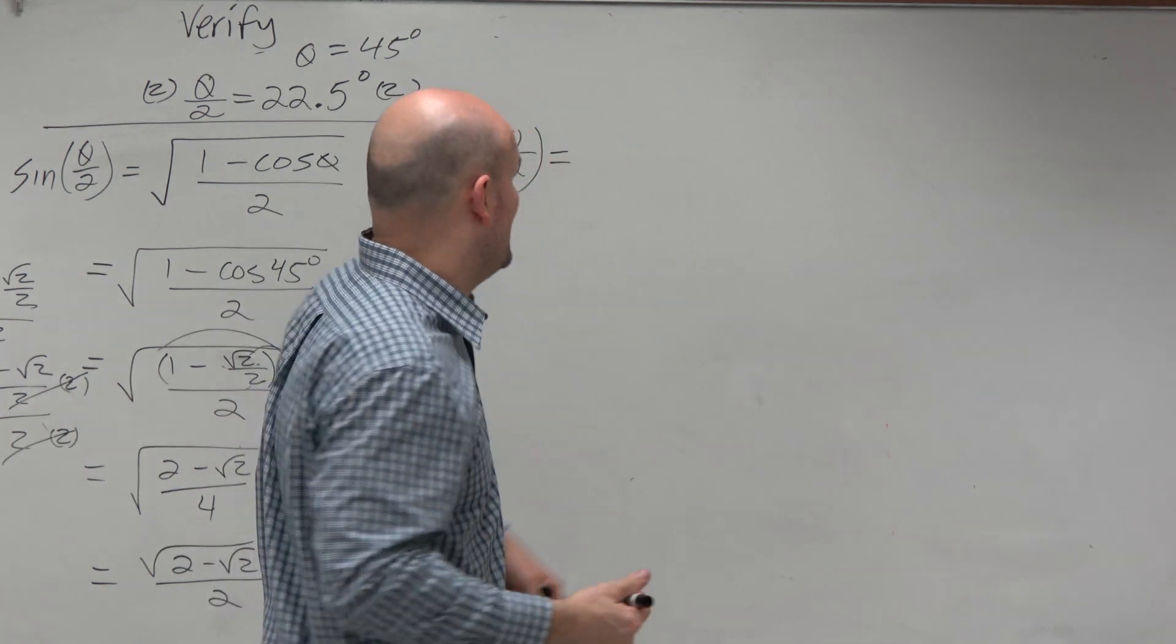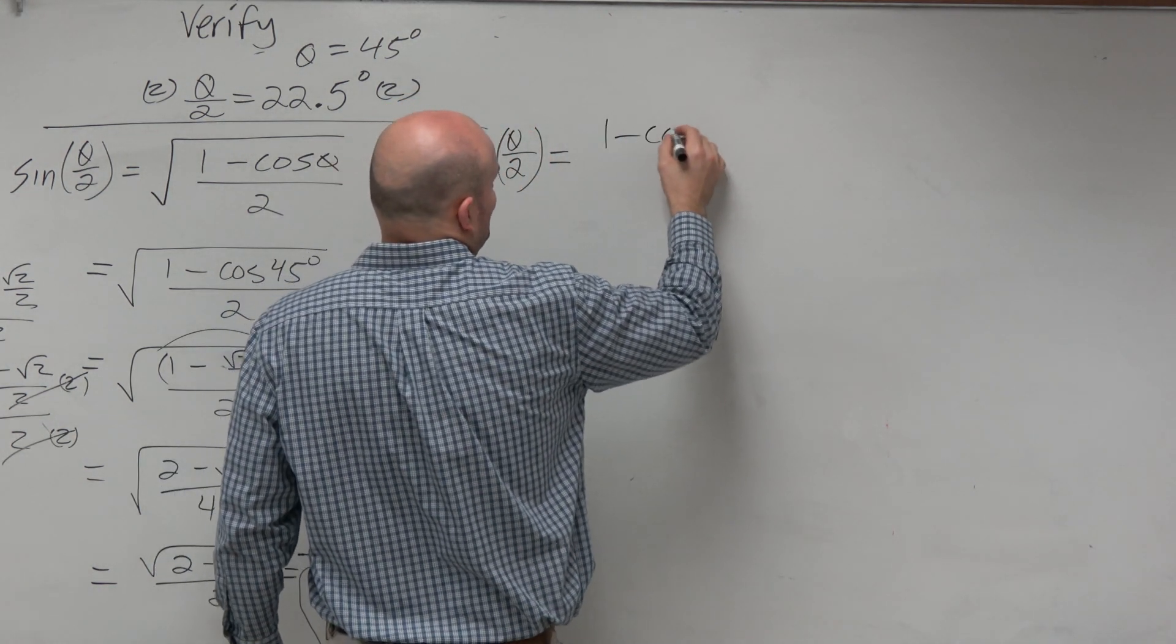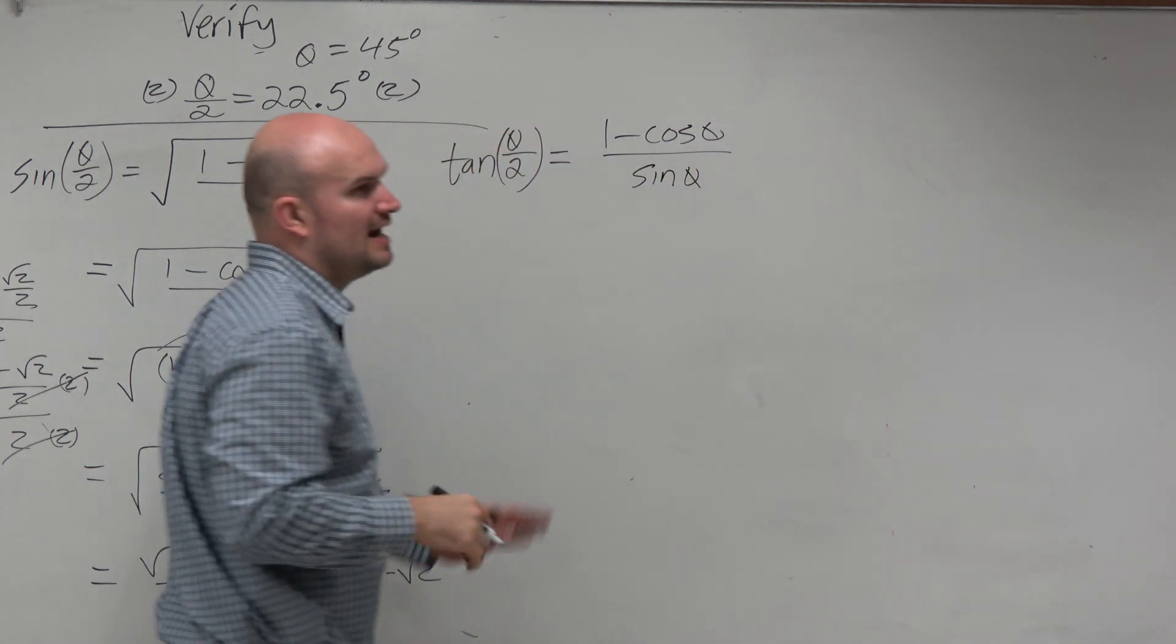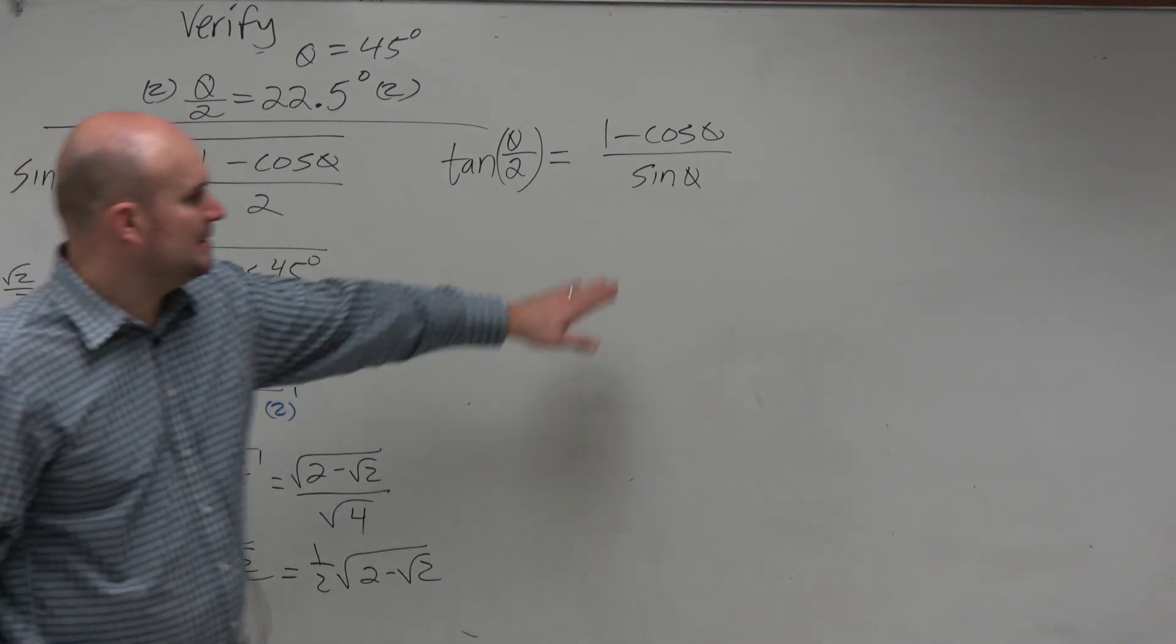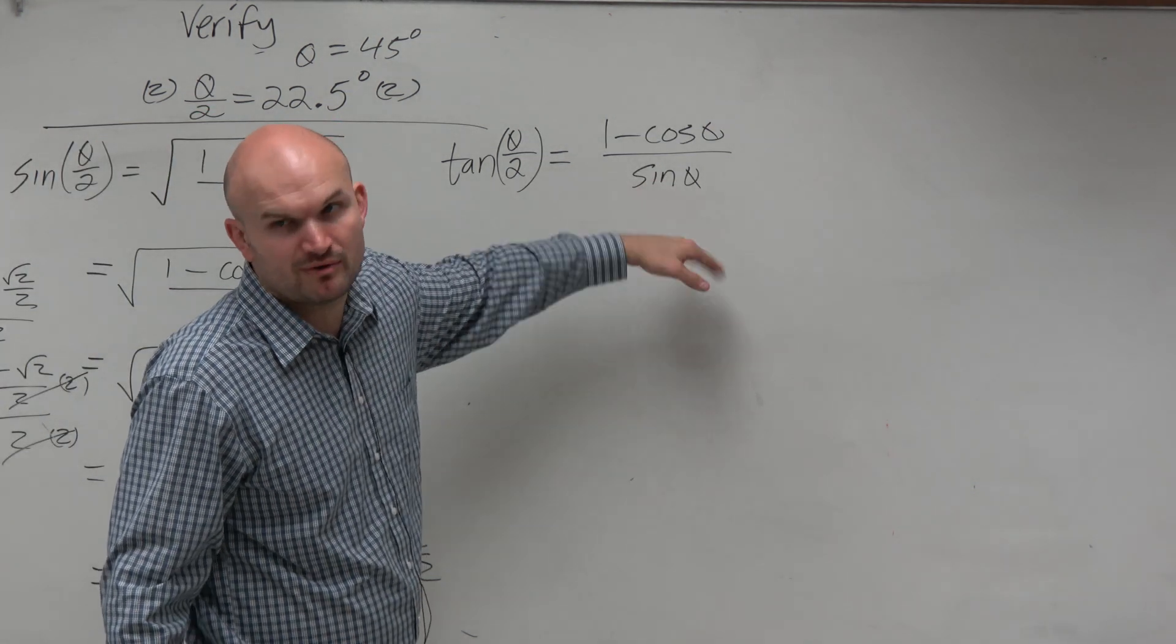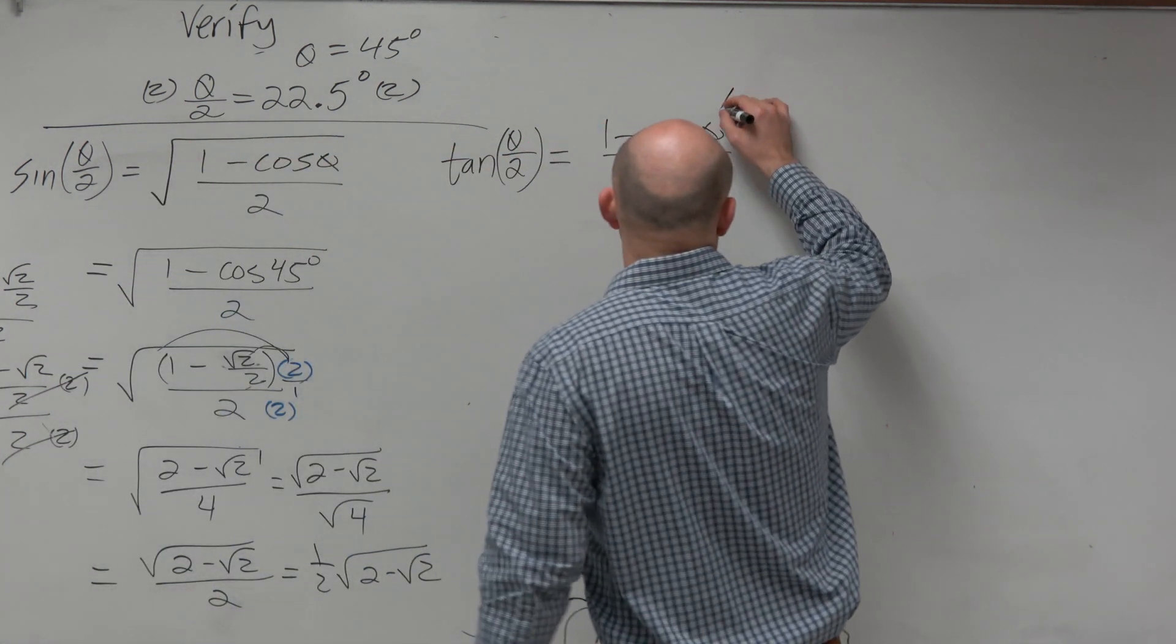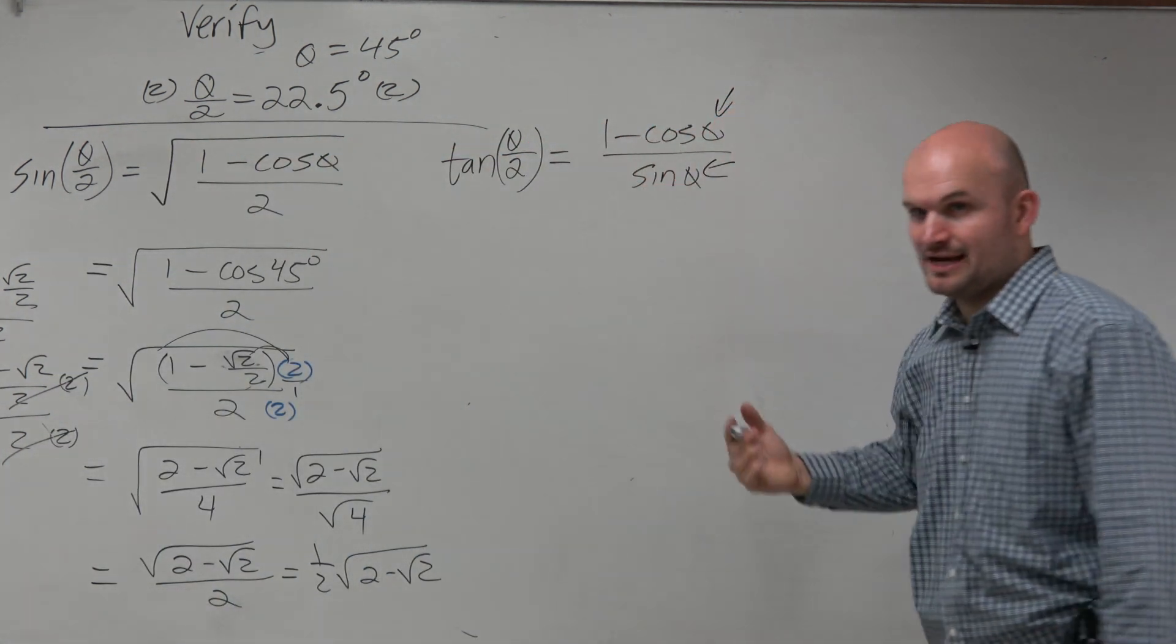In my opinion, I always like to use this one first. If it's more difficult, then I revert to the other one. I prefer to have a one-term denominator rather than two. Notice though, we're using theta, not theta over 2.